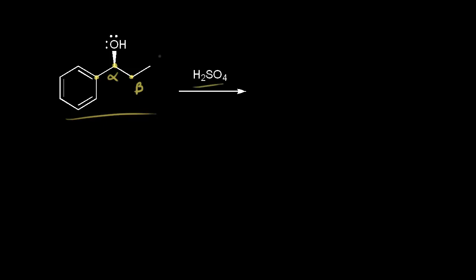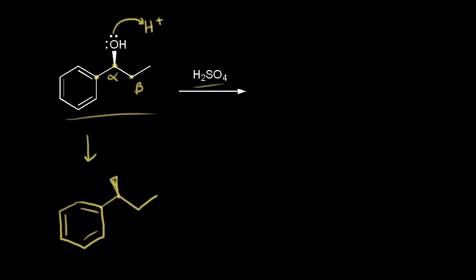Sulfuric acid is a strong acid and it will protonate our alcohol. A lone pair of electrons on the oxygen picks up a proton from sulfuric acid. Now oxygen would have two bonds to hydrogen, one lone pair of electrons, and a plus one formal charge. These electrons in magenta pick up a proton from sulfuric acid, forming this bond.